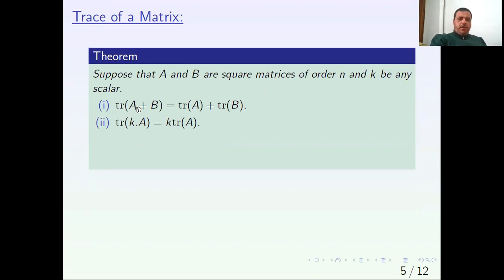From properties one and two, we can say trace of A plus or minus B equals trace of A minus trace of B. Trace of A transpose equals the trace of A.